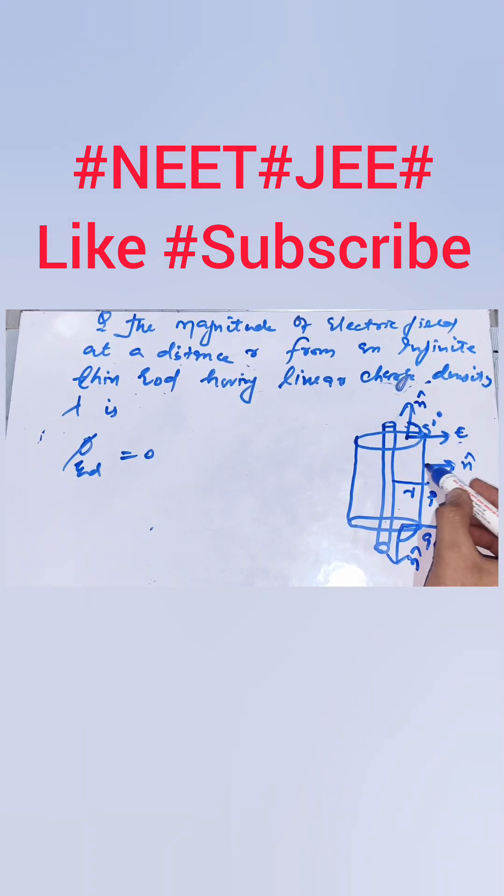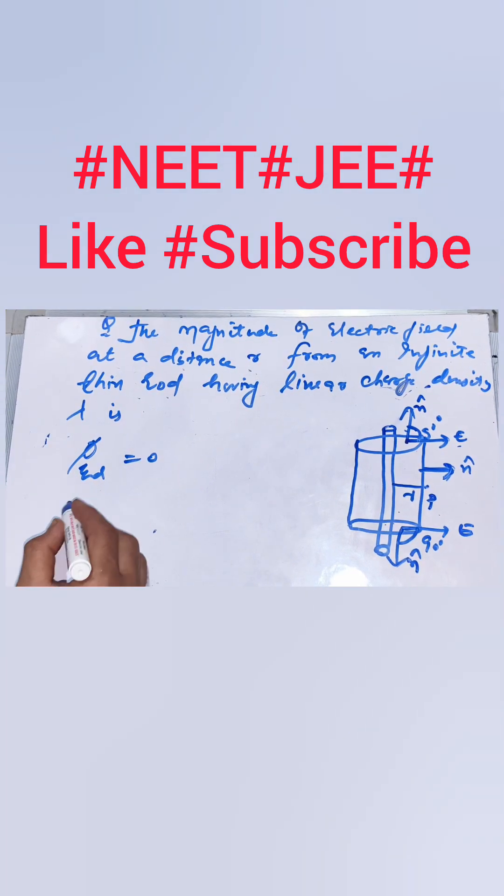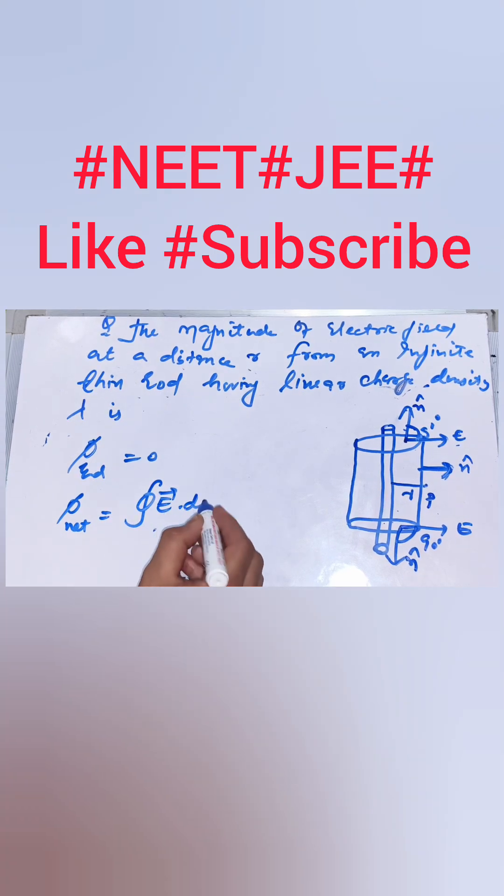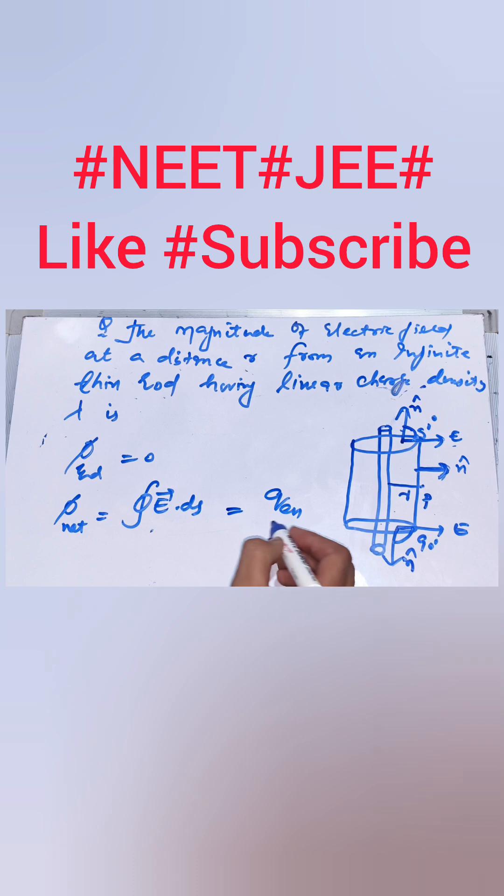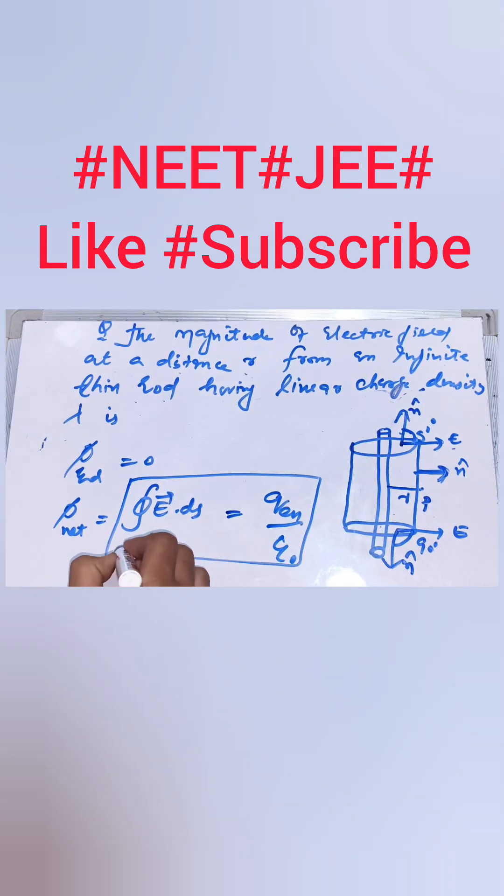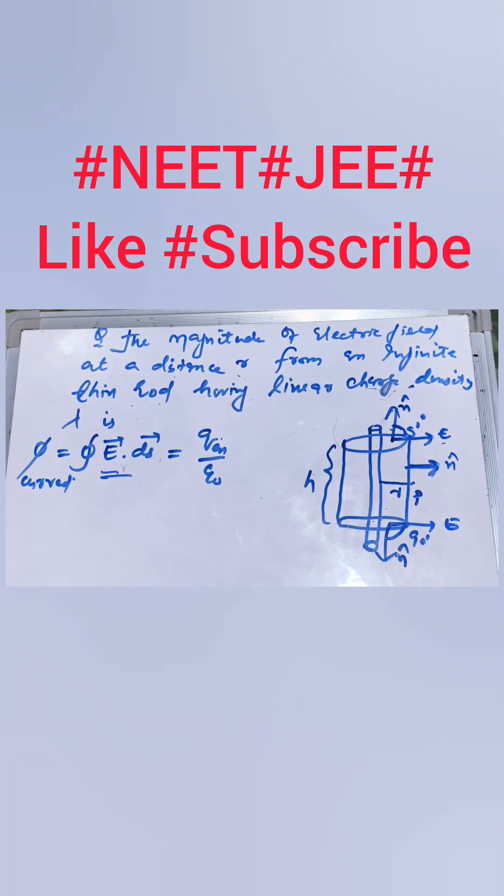So only the curved surface contributes towards the net flux. Net flux will be equal to the surface integral of electric field and that is equal to charge enclosed divided by epsilon not as per Gauss law. So flux through the curved surface will be Q enclosed divided by epsilon not.